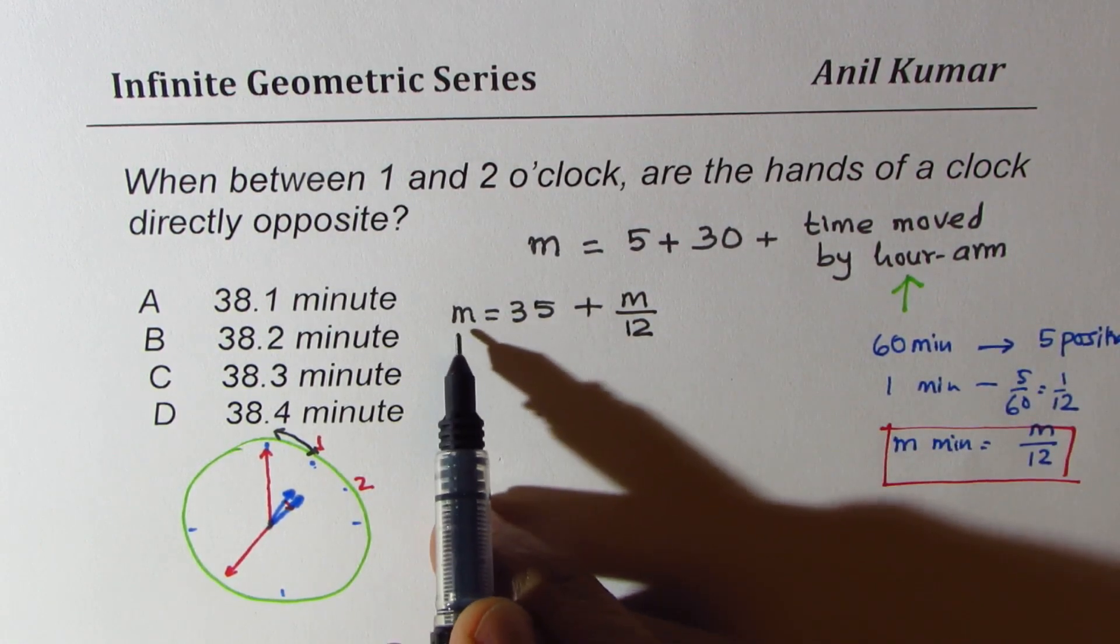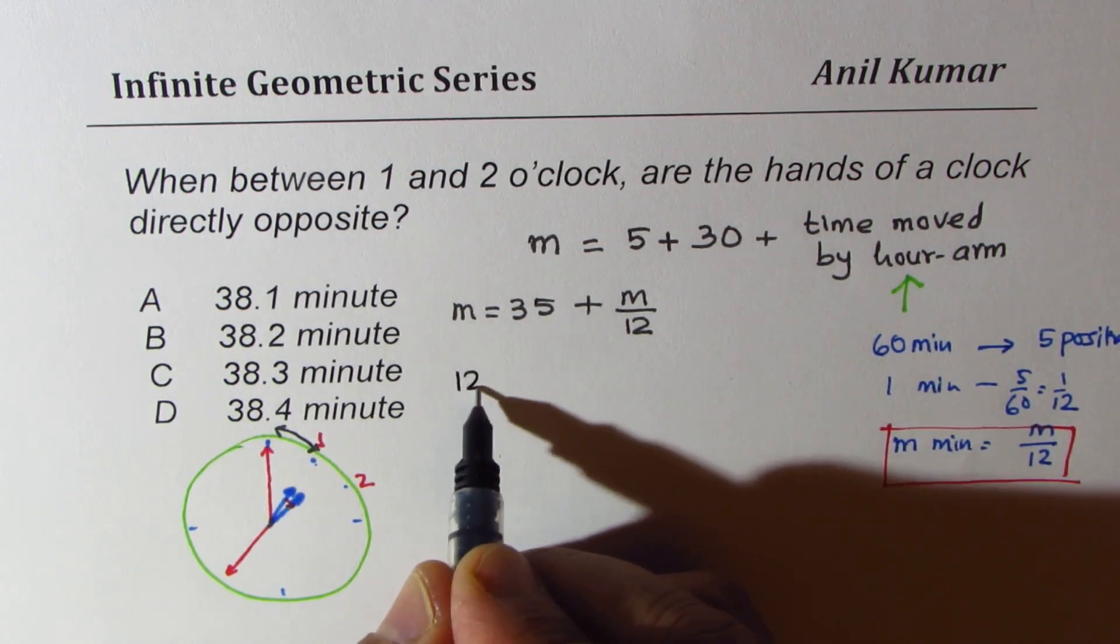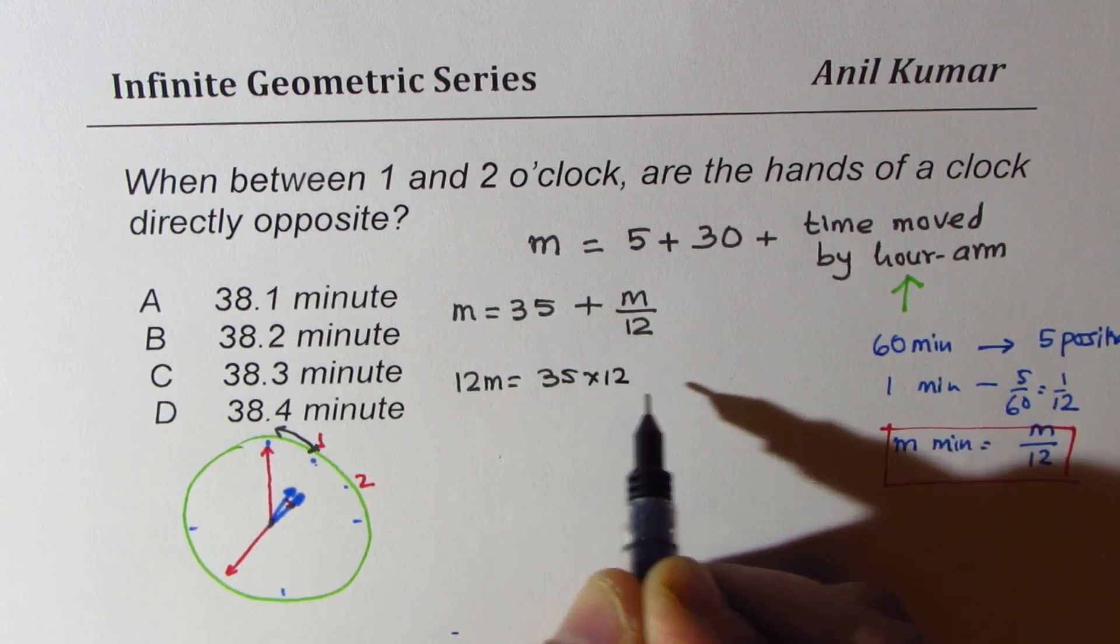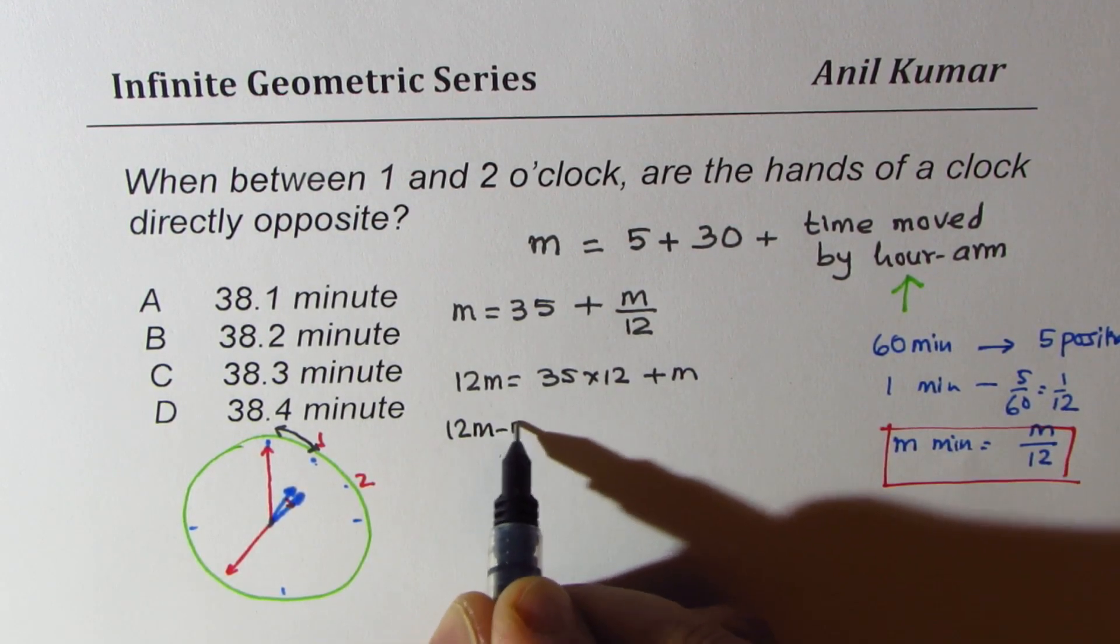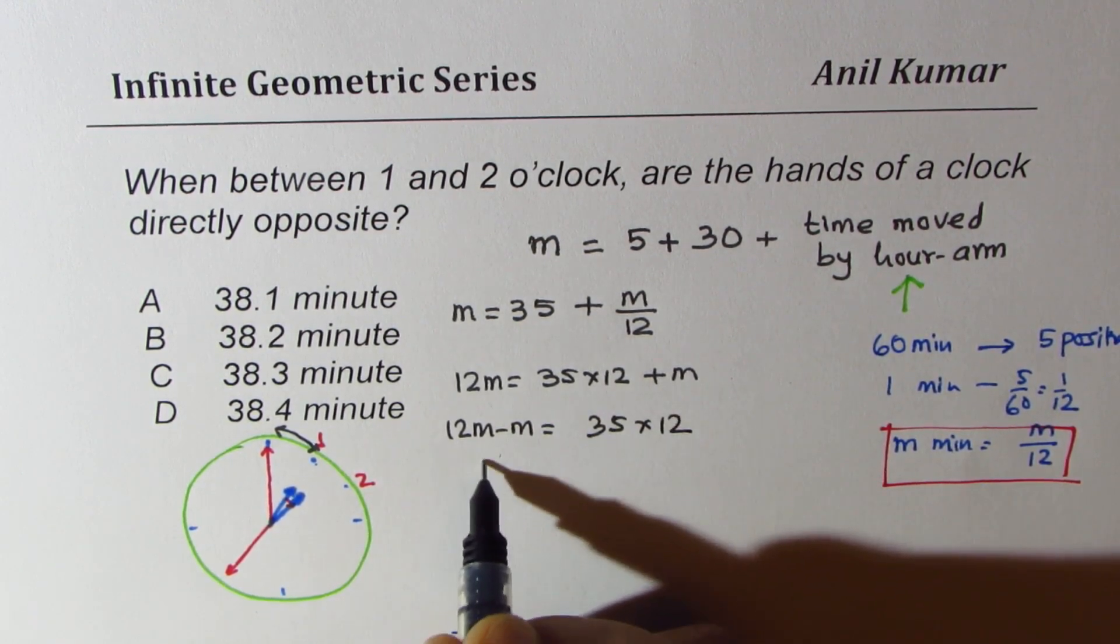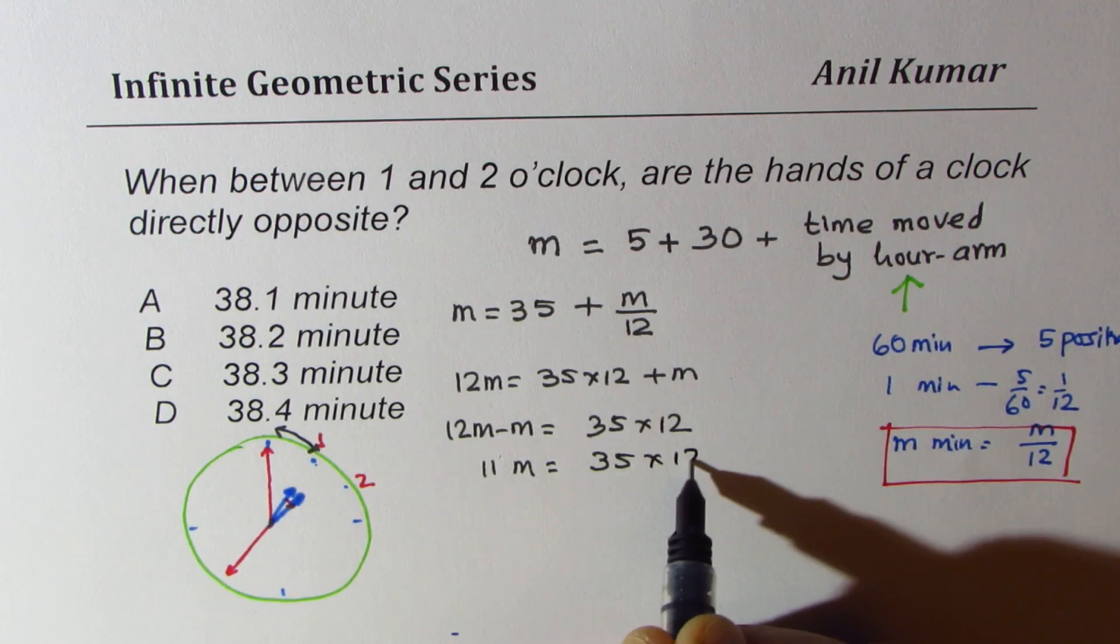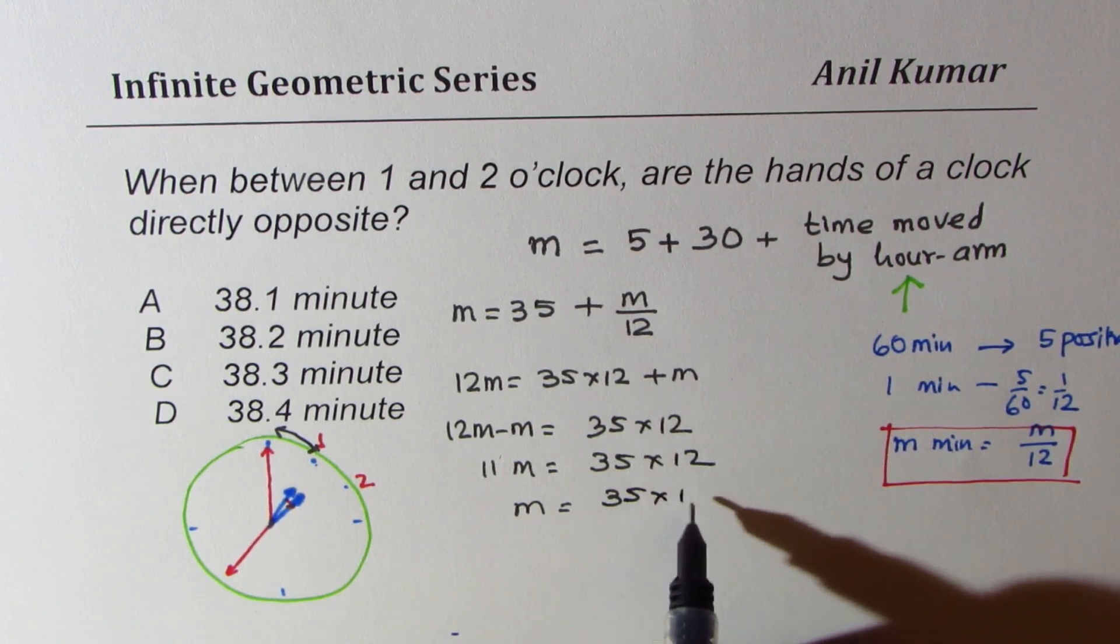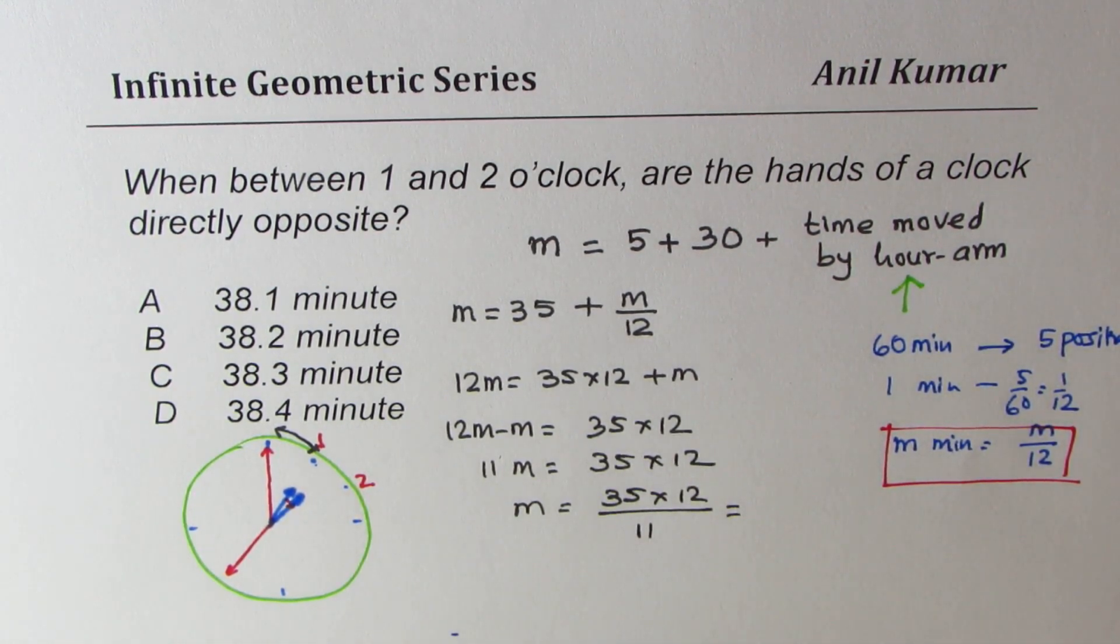Now, we can solve for m. This is time in minutes. So we get 12m equals 35 times 12 plus m. Taking away, we get 12m minus m equals 35 times 12. 11m is 35 times 12, and m should be equal to 35 times 12 divided by 11.